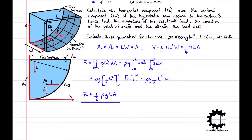The vertical component of the hydrostatic load FV is equal to the weight of the liquid, so FV equals rho GV. Substituting in our formula for the volume of the liquid gives FV equals one quarter pi rho G LA.